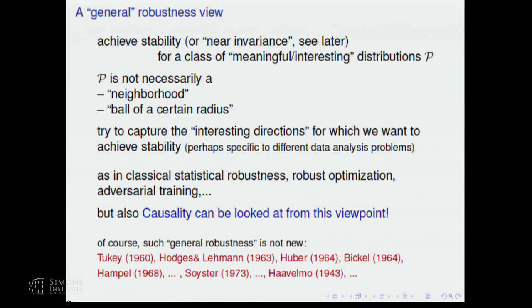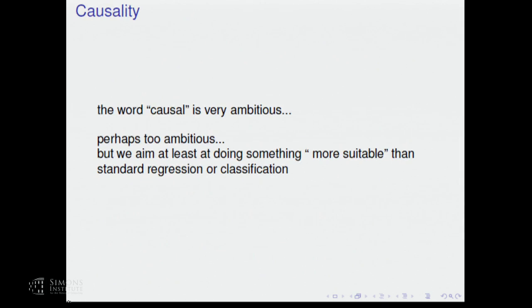Here is a more general robustness viewpoint. What we aim to do is achieve stability — we call it near invariance — for a class of meaningful or interesting distributions. This class is not necessarily a neighborhood or a ball with a Wasserstein metric. We try to capture interesting directions for which we want robustness. This is similar to classical statistical robustness and robust optimization, but perhaps surprisingly, causality can also be looked at from this viewpoint.